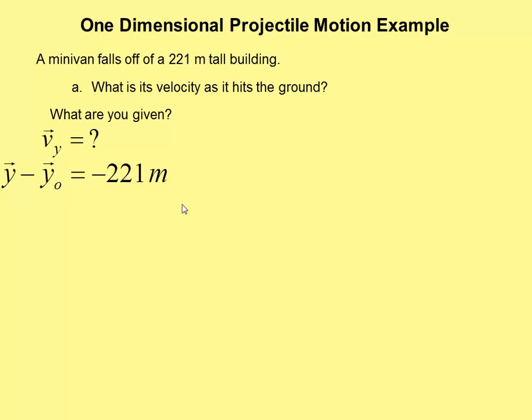But if we're going to use a conventional coordinate system where up is positive and down is negative, your final vertical position is below your starting position. And so you end up with a negative displacement.